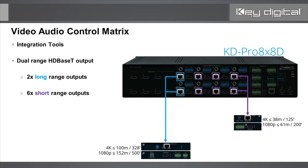There are two types of HDBaseT receive units included — eight total in the KD Pro 8x8D kit. Two are long-range, extending 4K up to 100 meters and 1080p up to 500 feet (152 meters). Six are standard range: 4K at 125 feet (38 meters) and 1080p at 200 feet (61 meters).